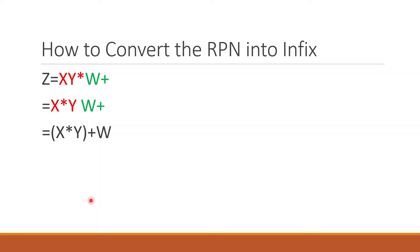Now let's see how we can get the infix notation back from the RPN we just solved. So this is the RPN notation. To convert it back into infix notation, again you have to move from the left side to the right side. The moment I encounter the first operator, I have to shift it between the two preceding operands. These are the two preceding operands, so I will shift the multiplication sign here.